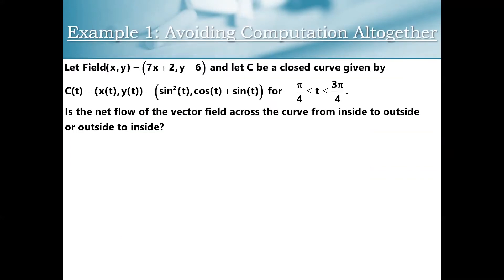My first piece of advice is when you're doing a flow along or flow across calculation using the Gauss-Green formula, you want to read the question very carefully. Look at the phrasing here. We've got some vector field, we've got some closed curve, and then the question says: is the net flow of the vector field across the curve from inside to outside, or outside to inside?